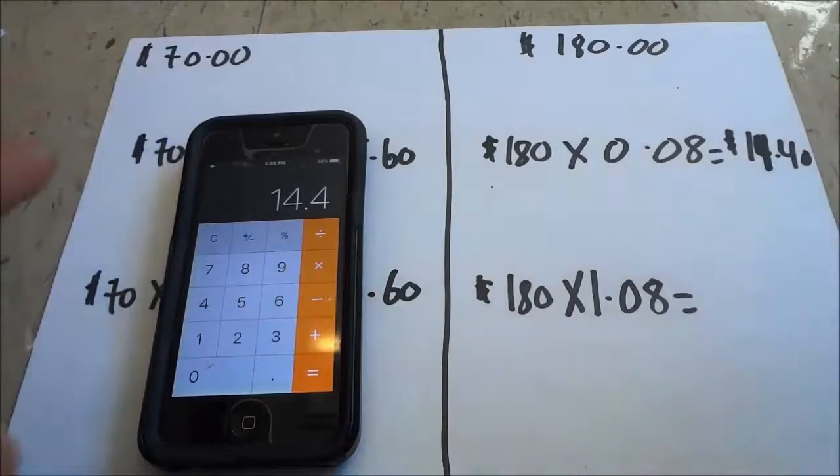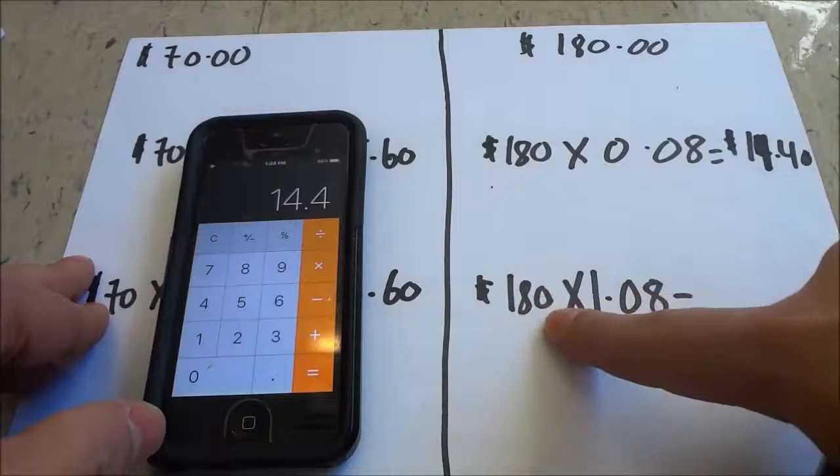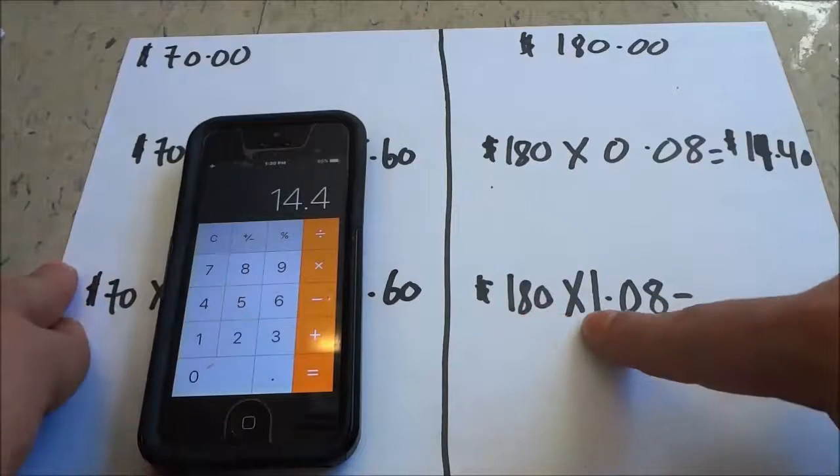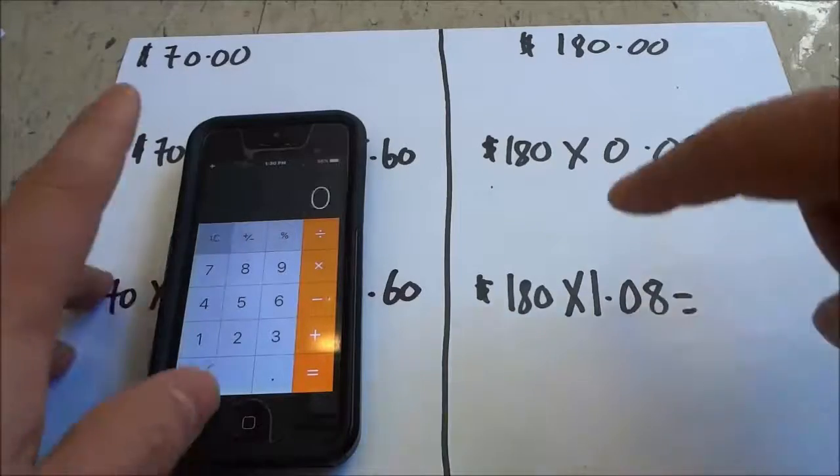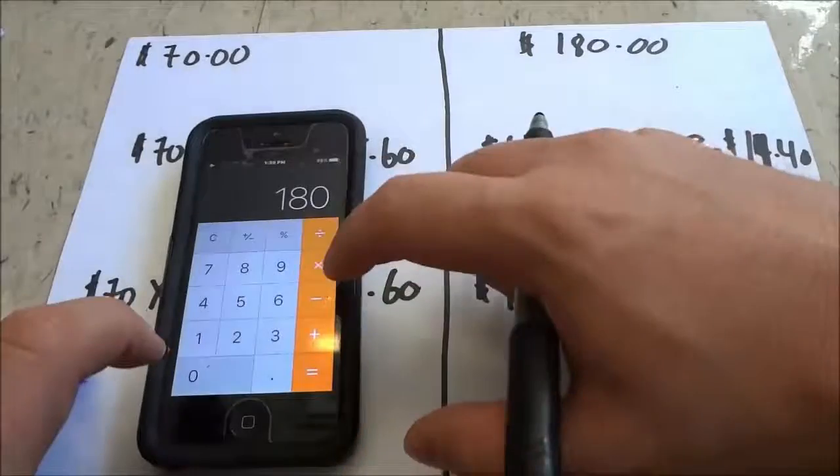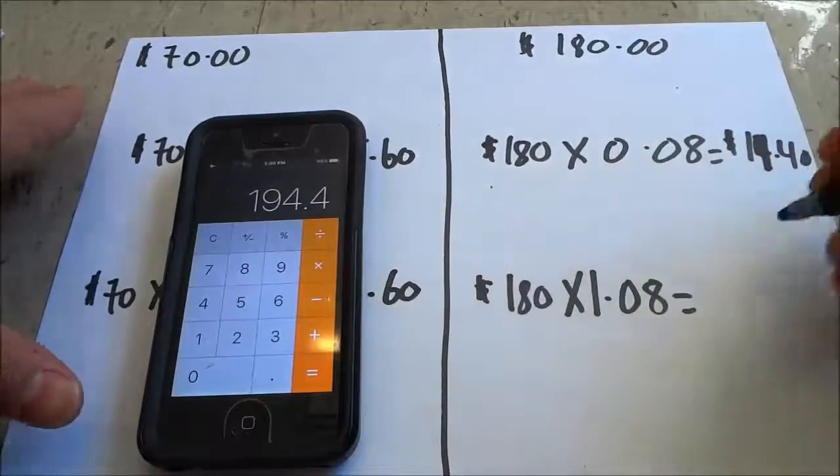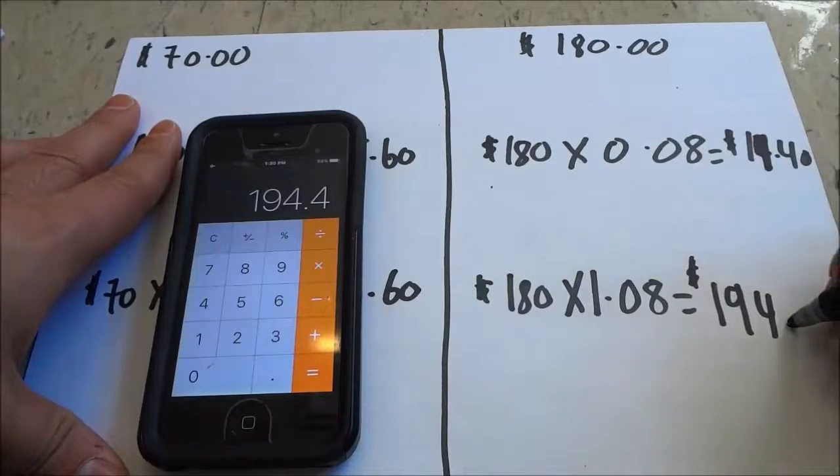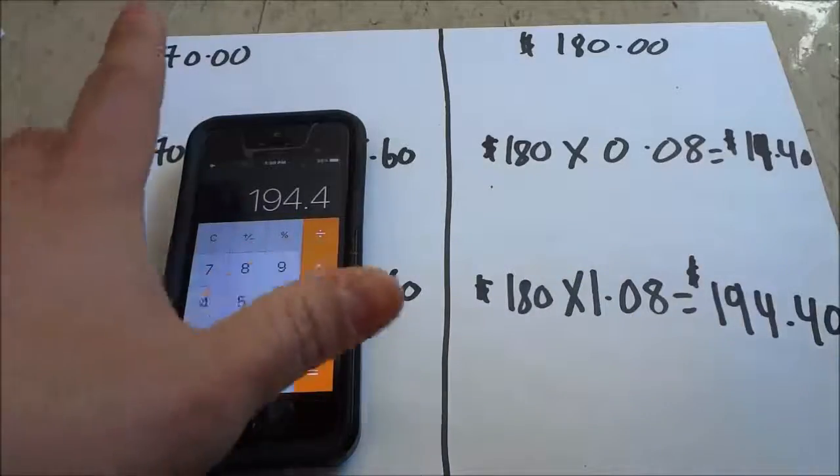And if I wanted to calculate the total cost of the original price plus the sales tax, I would just multiply it by 1. and then the sales tax percentage. So 1.08—once again, 180 × 1.08 equals $194.40.